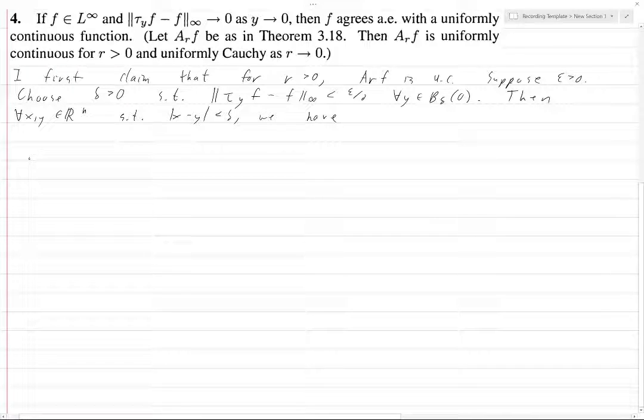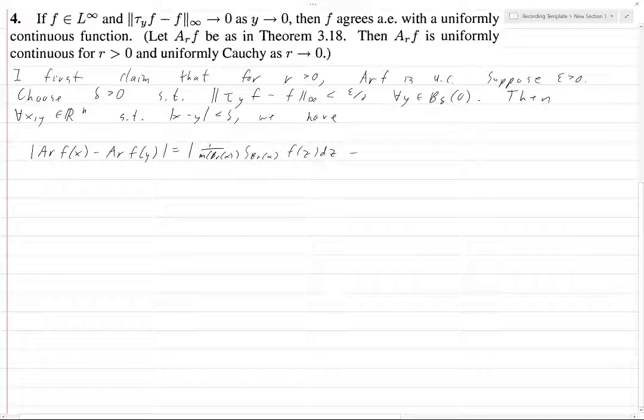Then for all x and y in R^n such that x minus y is less than delta, we have, we want to estimate the difference in norm between arf x and arf y. And so this is equal to, this is going to be a little hard to write.